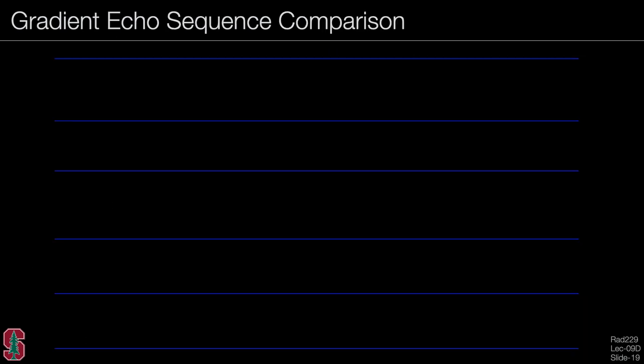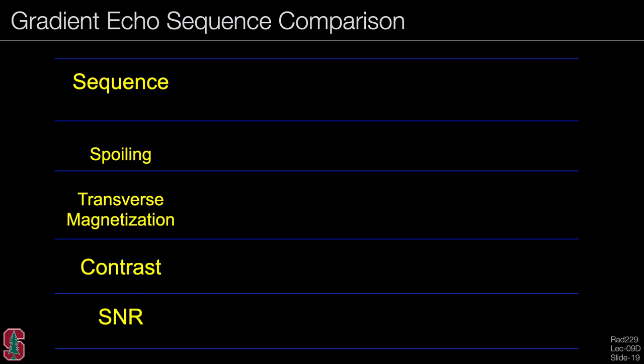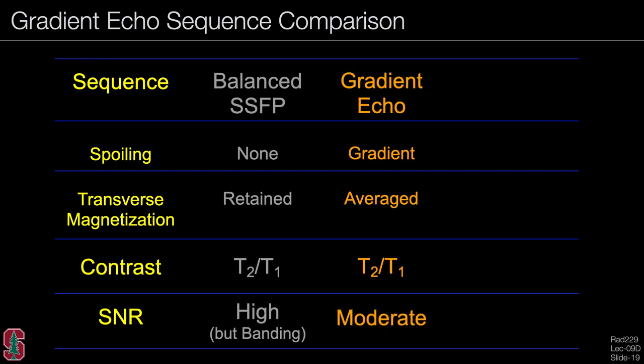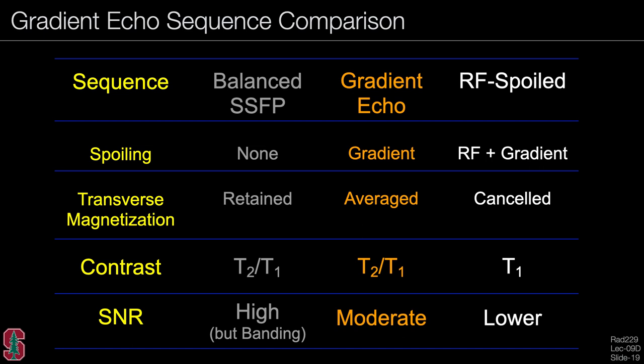Comparing sequences in a chart: balanced SSFP has no spoiling, retaining transverse magnetization, giving T2 over T1 contrast and high signal but with banding artifacts. Gradient echo uses gradient spoiling, which averages transverse magnetization, still giving T2 over T1 contrast but fluids are not as bright, with moderate SNR. RF spoiled imaging uses RF and gradient spoiling, canceling transverse magnetization for a pure T1 contrast, at the price of slightly lower SNR.